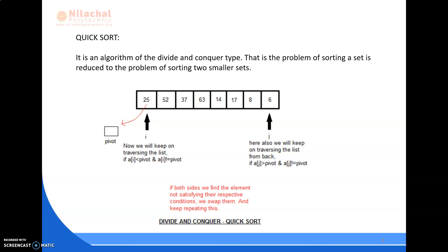In this slide we will be discussing about QuickSort. In QuickSort we actually use the divide and conquer method — it is an algorithm of divide and conquer type. This is the problem of sorting a set where the set is divided into two smaller parts, and these two smaller parts are then sorted. The array is taken and we select one pivot element, generally the first element of the array.